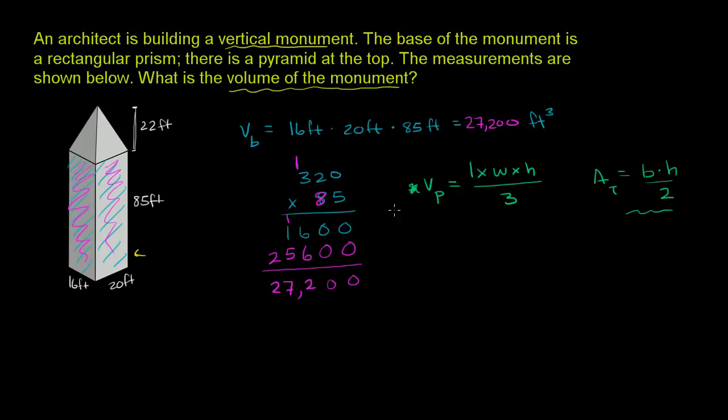So the volume of the pyramid, this pyramid in particular, we know what the length and the width are. It's the same as the length and the width of the actual base. It's going to be 16 feet times 20 feet. And then we're going to multiply it times the height of the pyramid.